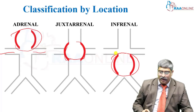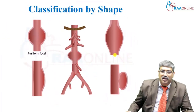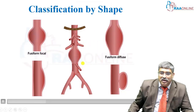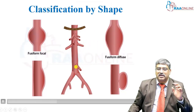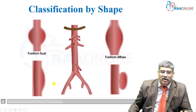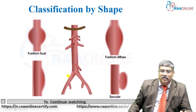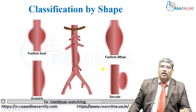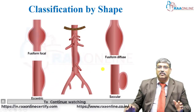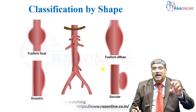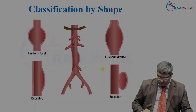Coming to classification by shape: fusiform is a diffuse, symmetrical dilatation of the abdominal aorta; saccular is an asymmetric outpouching; and eccentric is another morphological variant. This is the classification of abdominal aortic aneurysm based on shape.